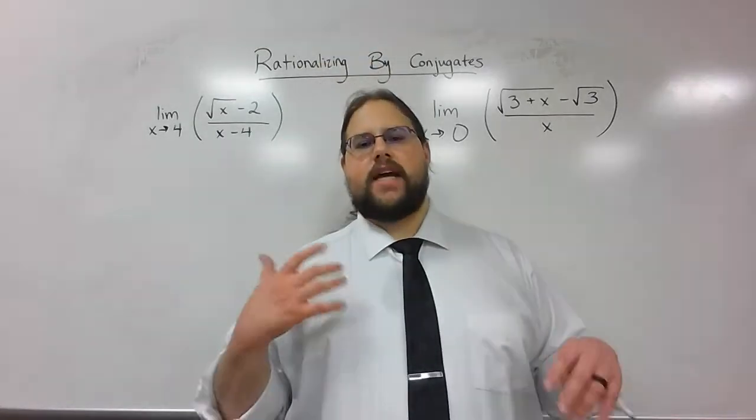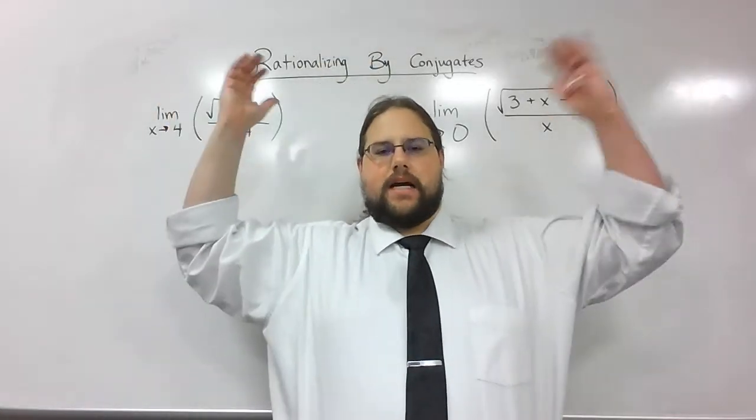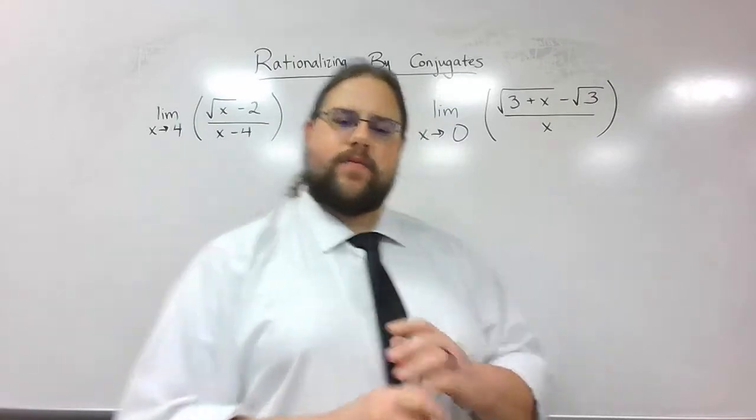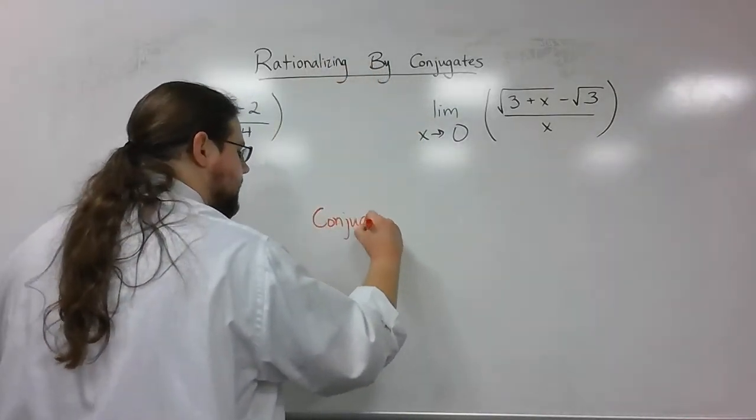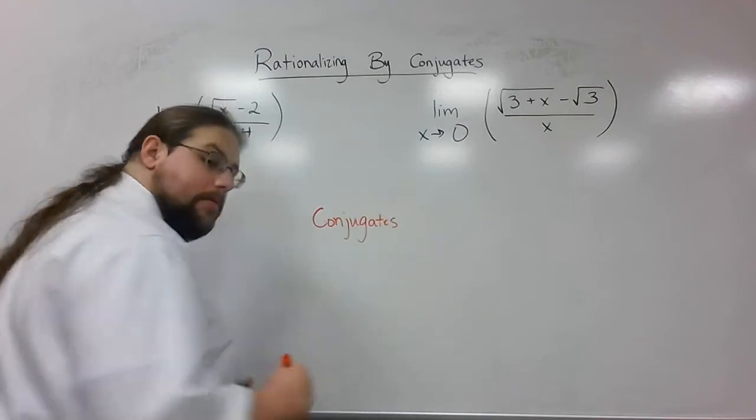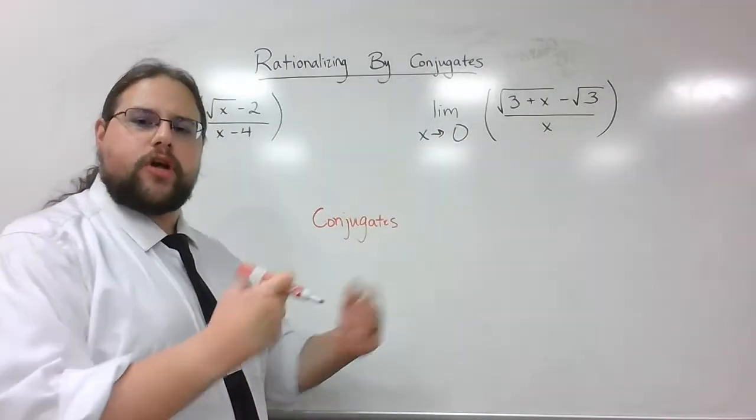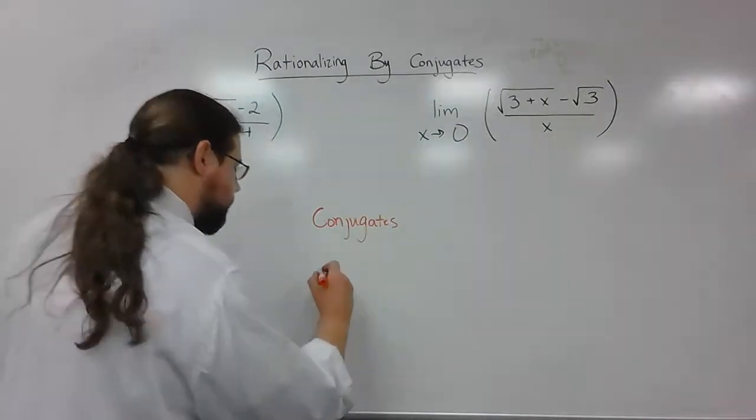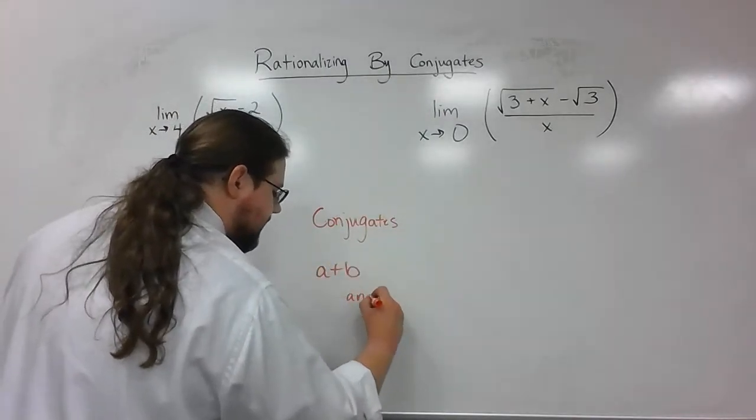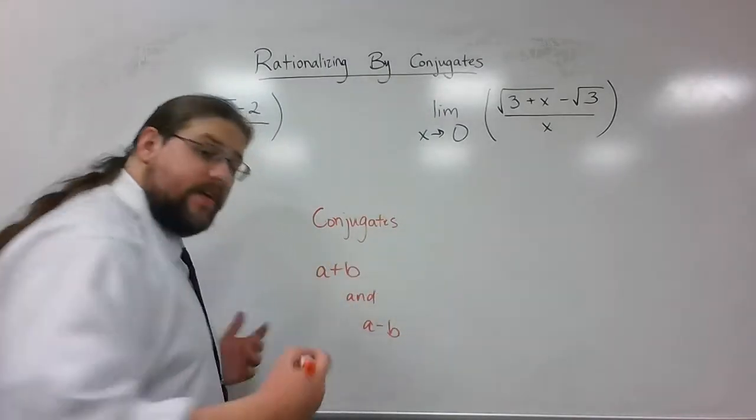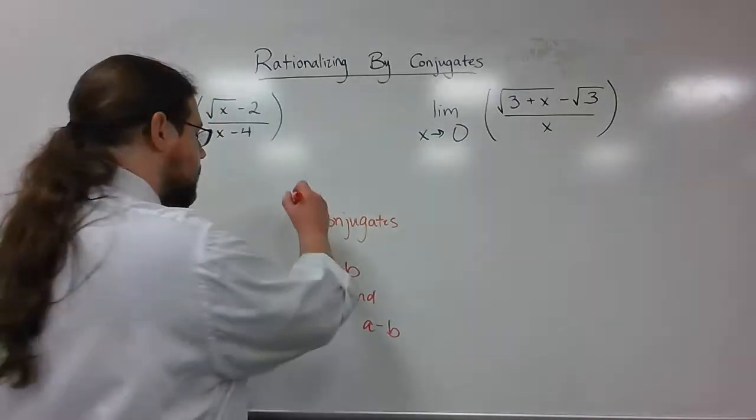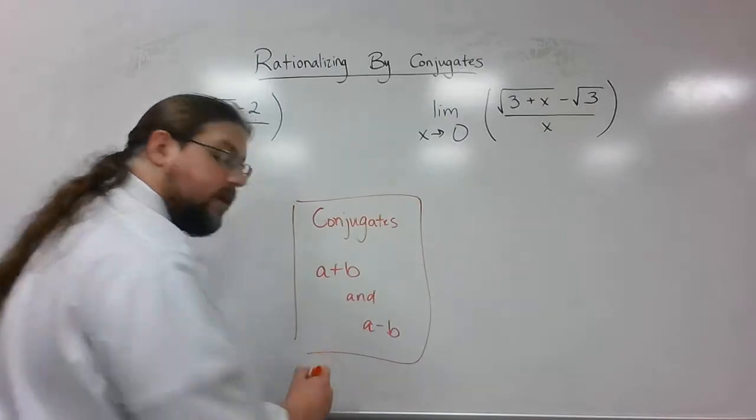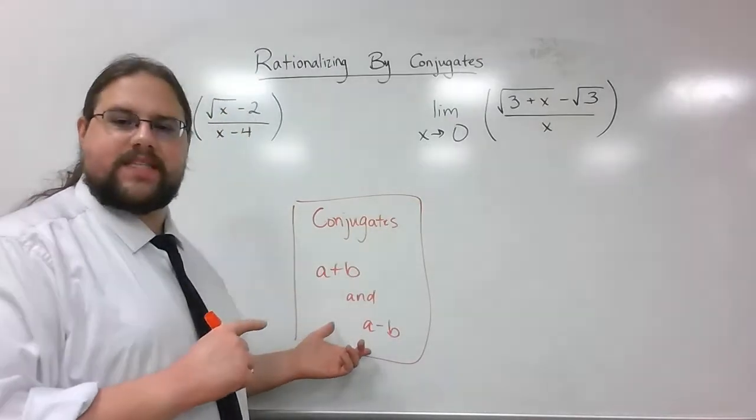So in this video, I'm going to talk about another technique known as rationalizing by conjugates. In case you've forgotten from way long time ago what conjugates were, conjugates occur when you have a binomial, so something with two terms, and all you do is change the sign. For instance, if you have a plus b, then its conjugate is a minus b, and vice versa. If you want to find the conjugate of a minus b, it's just a plus b. They're essentially opposites of each other in one way only. Just one of the signs has changed.